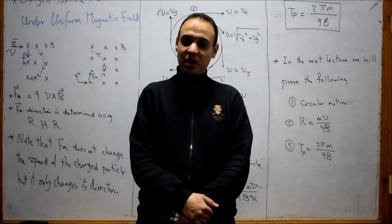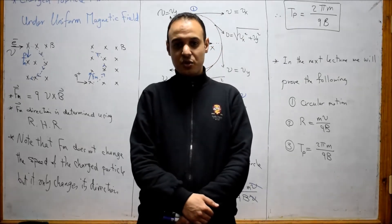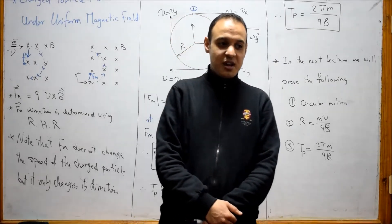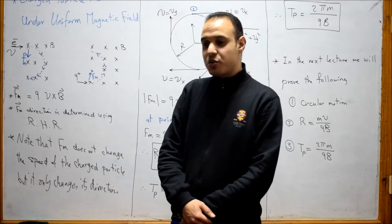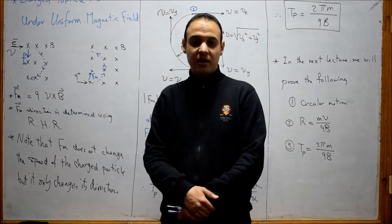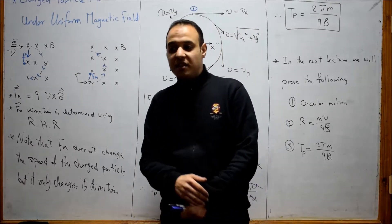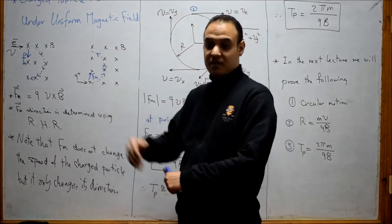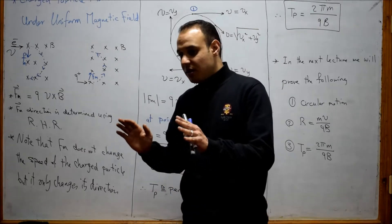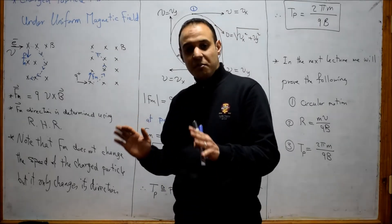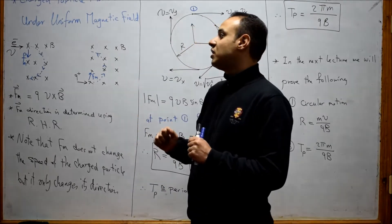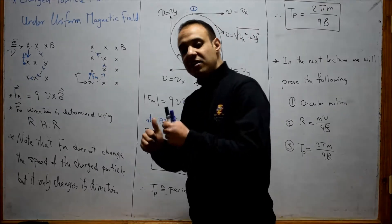Welcome back to our course. In this lecture, we'll analyze the motion of the electron as a charged particle, but now under a uniform magnetic field. In all the lectures we've taken before, the motion was under a uniform electric field.